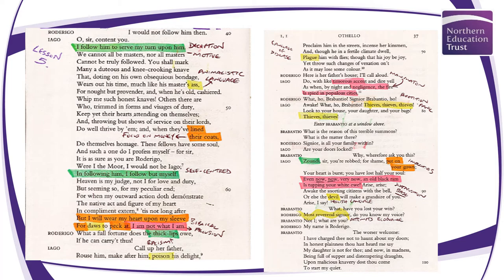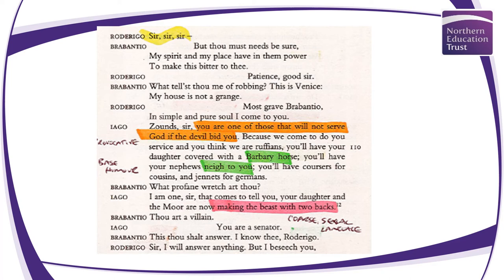Through this scene we see lots of examples of Iago's speech. Roderigo panics — 'Sir, sir, sir' — and is interrupted by Brabantio, a sign of authority. Brabantio says, 'My spirit and my place have in them power to make this bitter to thee,' essentially threatening Roderigo. He is physically at a high window, emphasizing his high status. Roderigo says, 'This is Venice. My house is not a grange,' reinstating the setting — Venice was known as a place of order and sophistication.